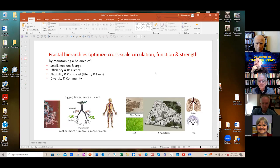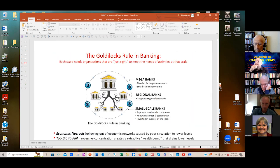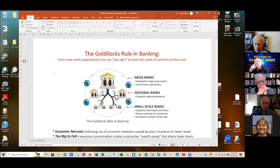For me, the reason fractal hierarchies are so common is because they optimize cross-scale circulation, function and strength, and they do this by maintaining a balance of small, medium and large entities, which is why you have a power law. Healthy hierarchies have a power law distribution. What Bob's work does is it also explains why that same kind of balance is necessary to balance efficiency and resilience. In fractal terms, it also balances flexibility and constraints, and diversity and unity or what I call community. These things are actually pretty relevant to social systems because all levels and sizes play a role, but too much or too little of any one of them creates problems for the health of the whole.